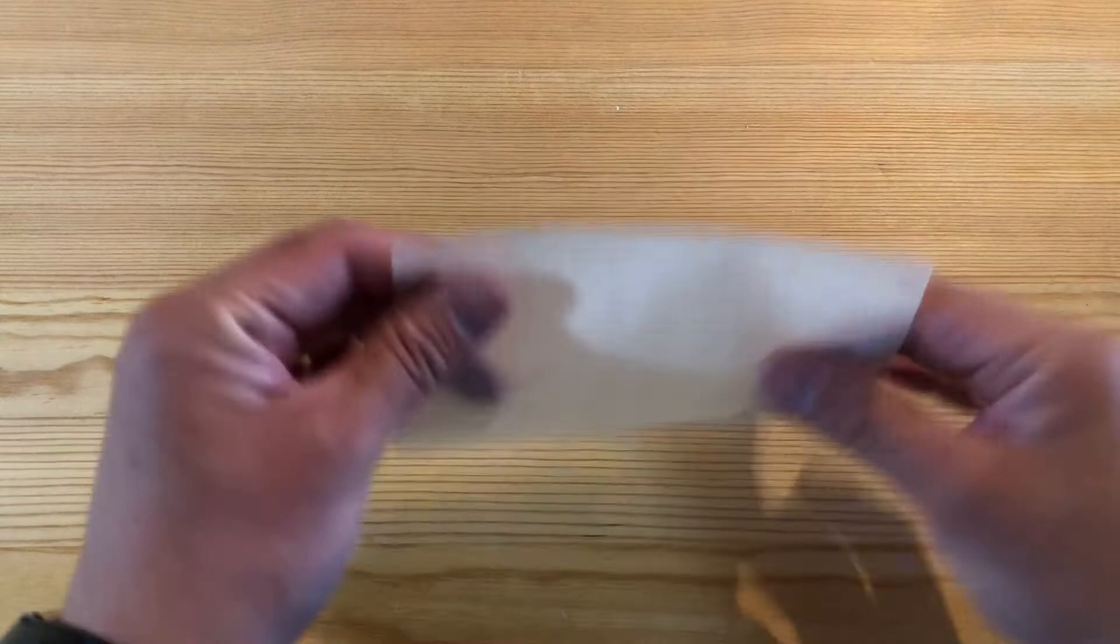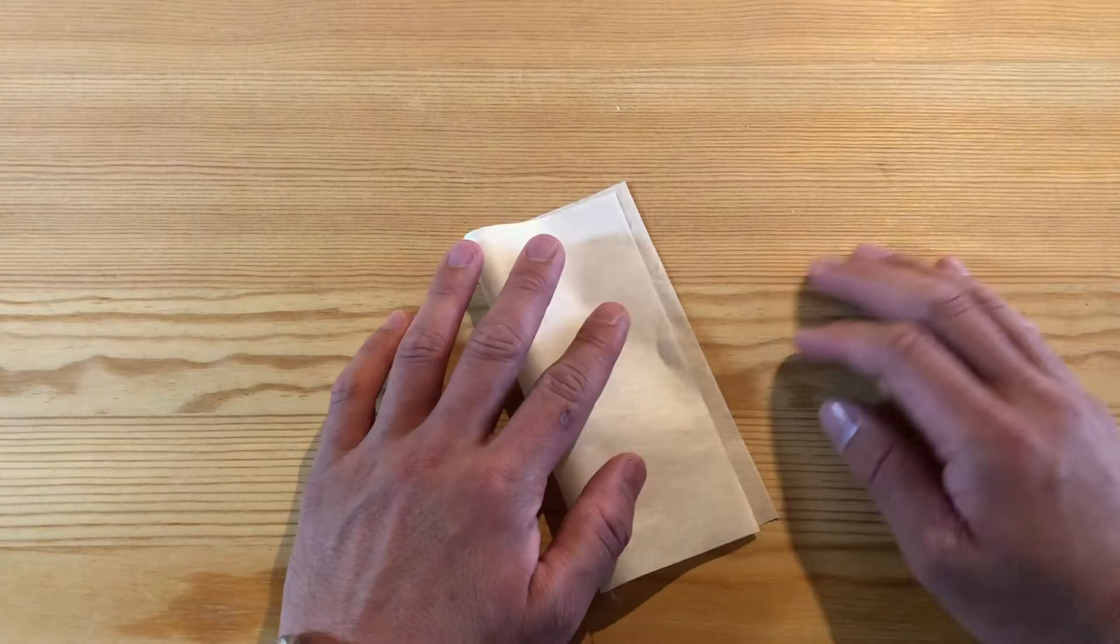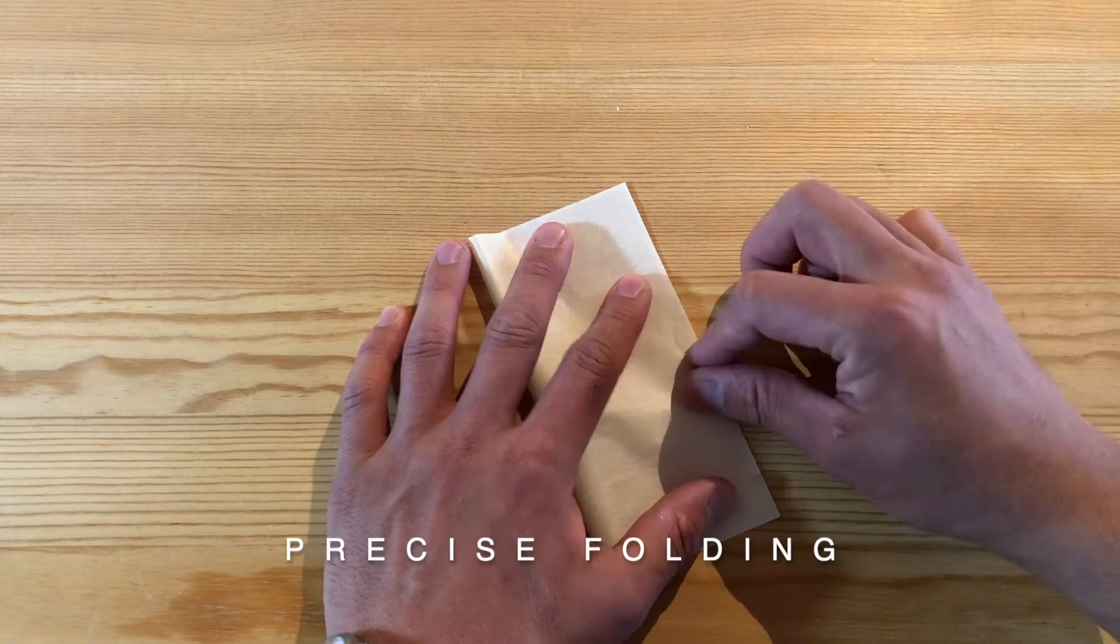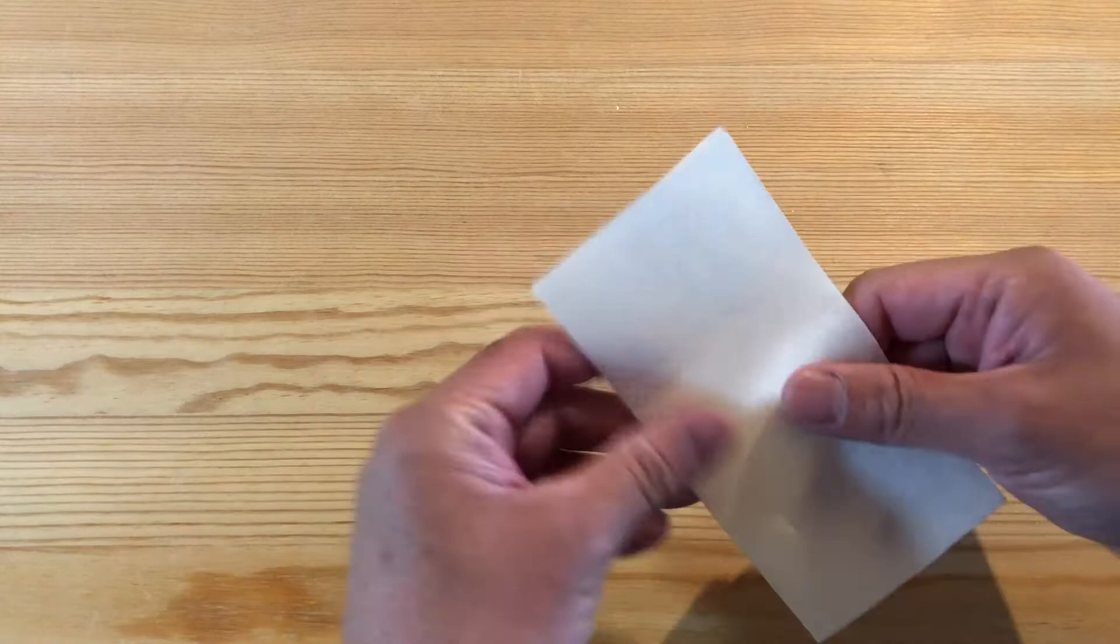So first, here I have an origami paper. We fold like this. Precise folding is very important. It's kind of mathematical thinking. In a way, it's quite difficult sometimes - delicate work.